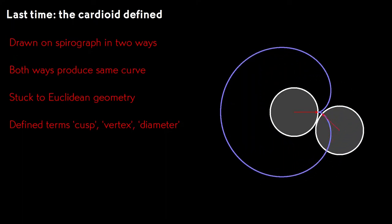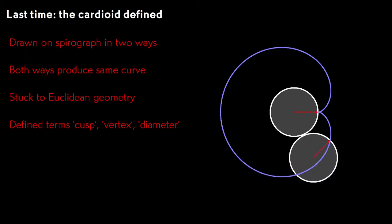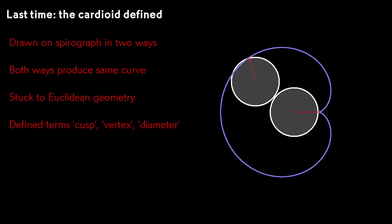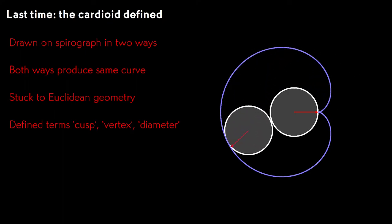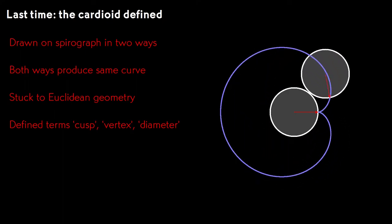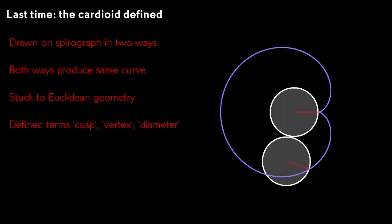Last time, we defined the cardioid with a spirograph and in Euclidean fashion with straight edge and compass. We defined the cusp, the vertex, and the diameter and proved that all our constructions of the cardioid so far are equivalent.